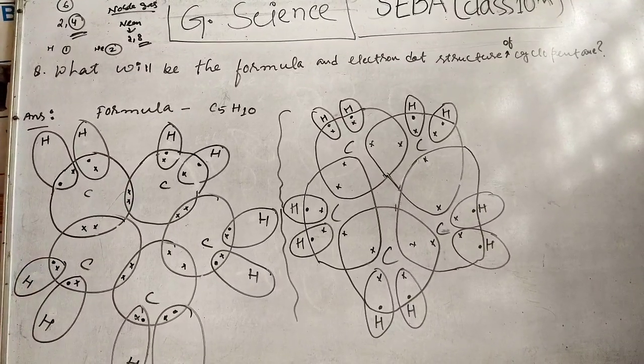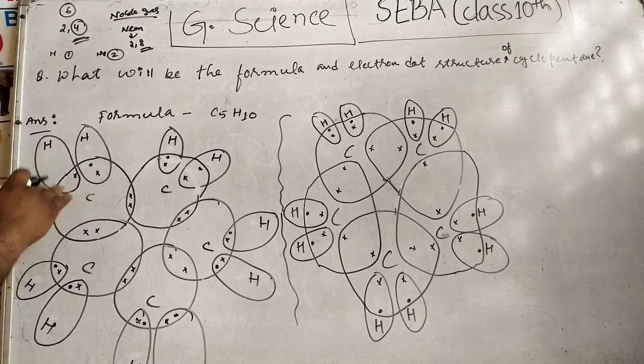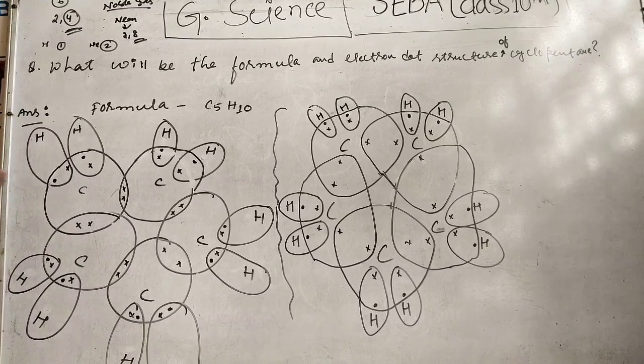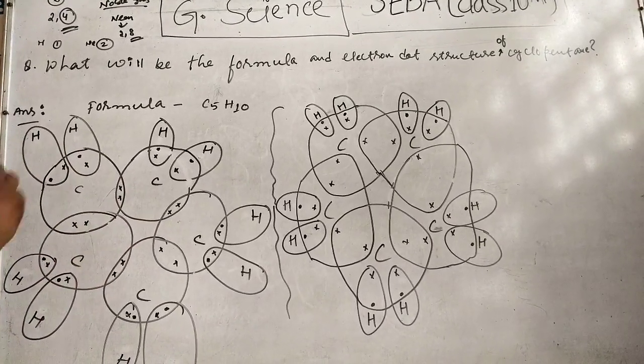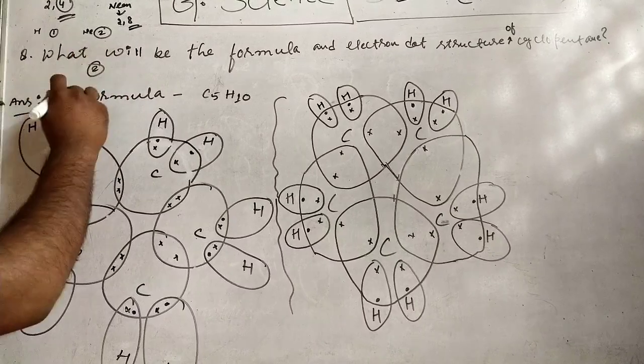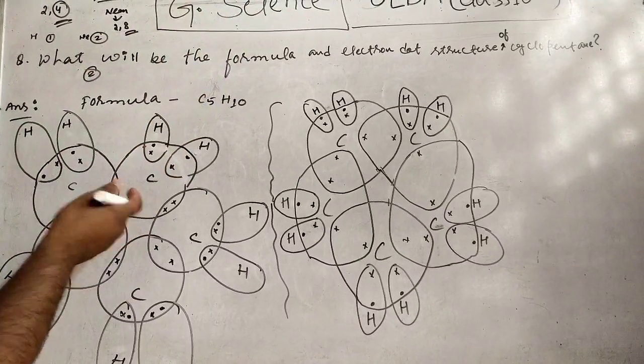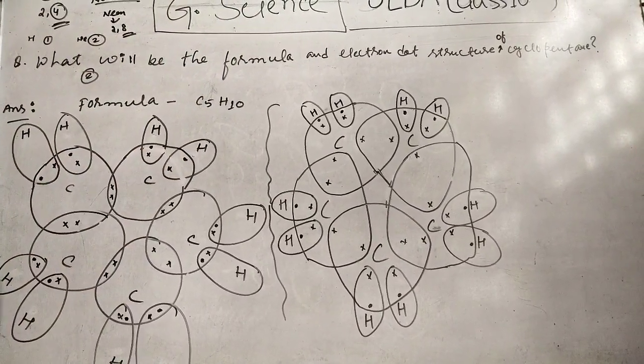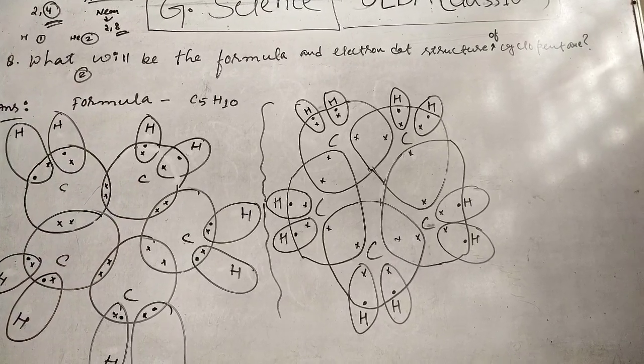This small circle is hydrogen and the big circle is carbon. So we can make this way, we can make this way, and this will make this way. Maximum two marks - like formula one mark and the structure one mark, or only for structure two marks. We can make this way, only for structure.